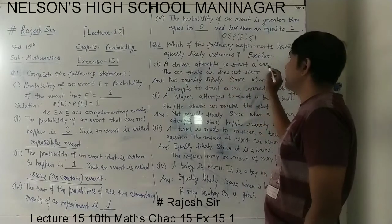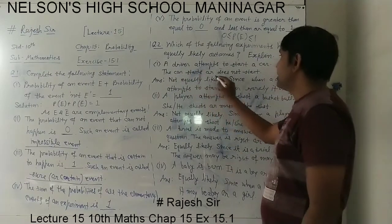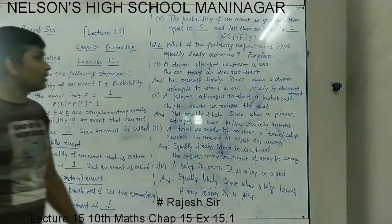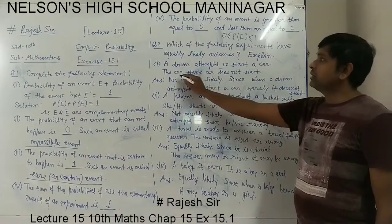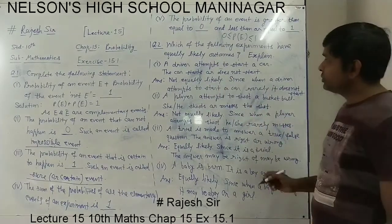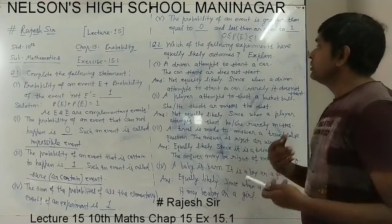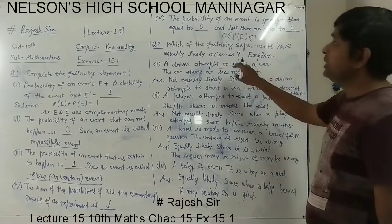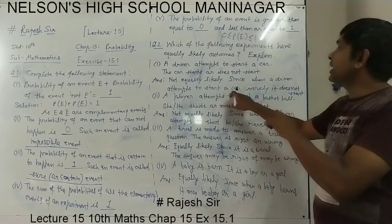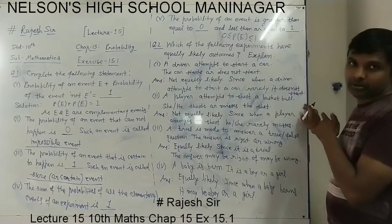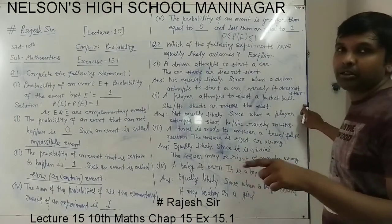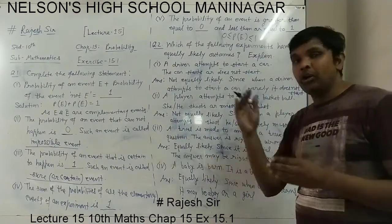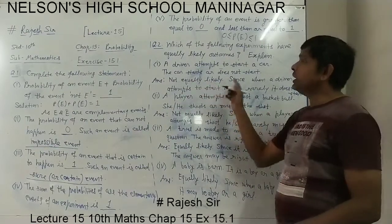The first is: a driver attempts to start a car — the car starts or does not start. This statement is not equally likely. Since he is a driver, when a driver attempts to start a car, rarely it does not start. The car will start many times and rarely it will not start. So starting or not starting is not equal — it is not equally likely.